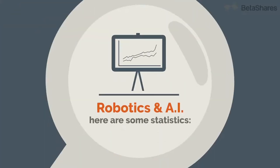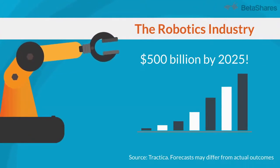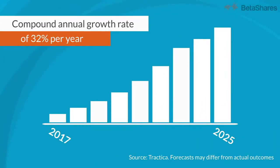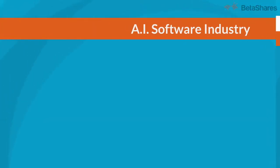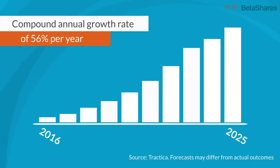Here are some statistics. The robotics industry is forecast to reach 500 billion by 2025, a compound annual growth rate of 32% per year from 2017. Revenue from AI software is forecast to grow to 36.8 billion by 2025, a compound annual growth rate of 56% per year from 2016.